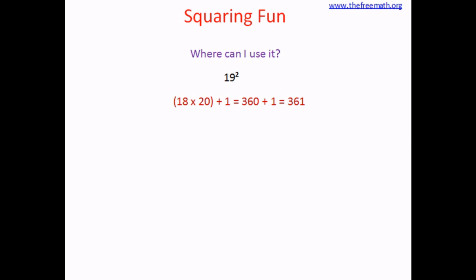You can use this trick for all the numbers like 19, 29, 39, 49 and so on. For example if you want to calculate the square of 99, just multiply 98 and 100 and add 1 to the product. That is a lot easier.